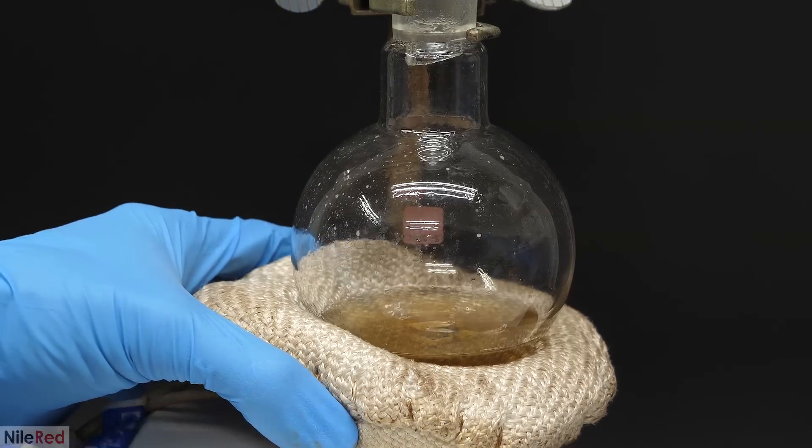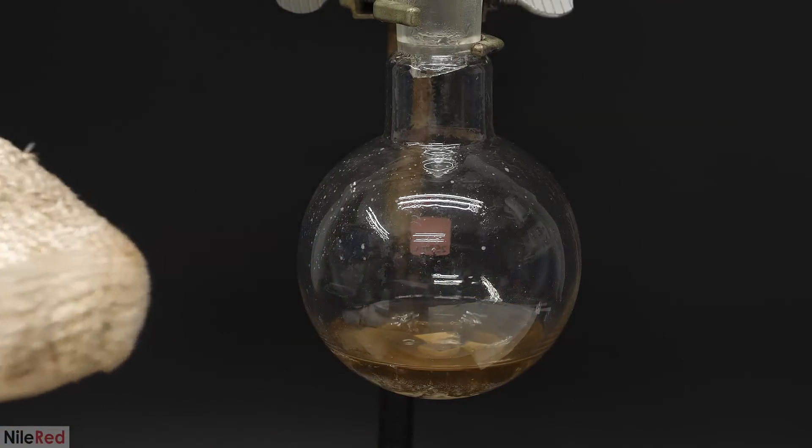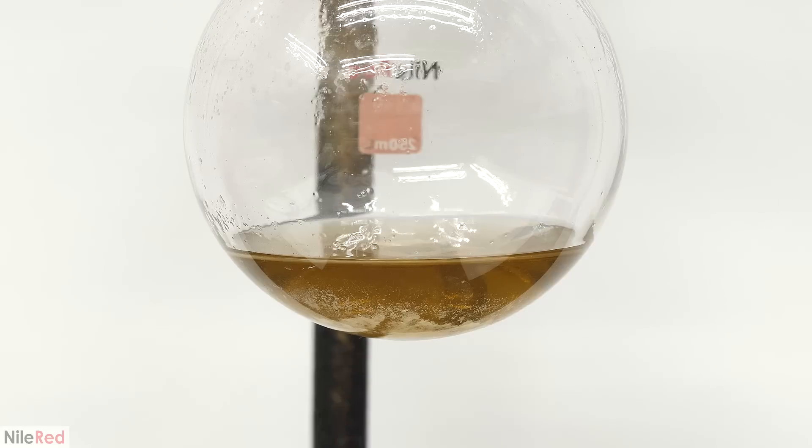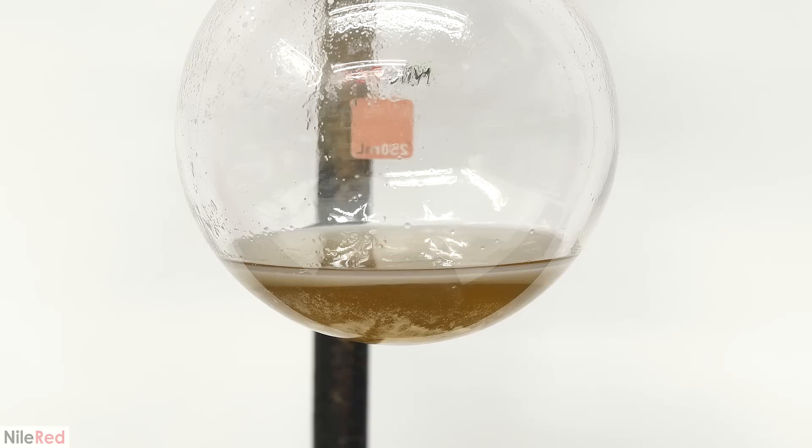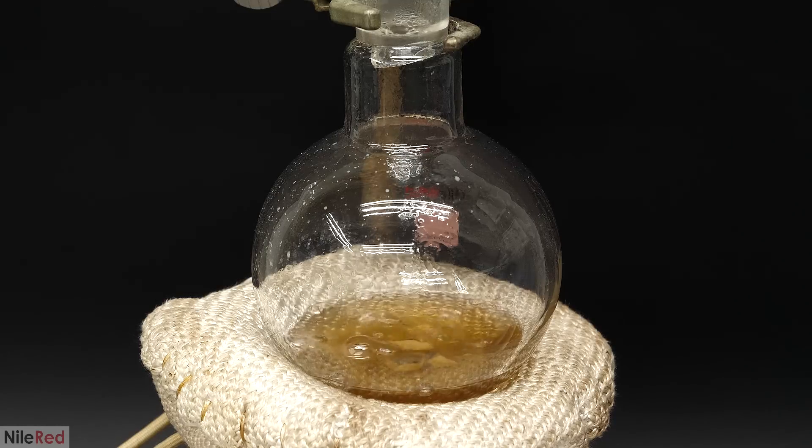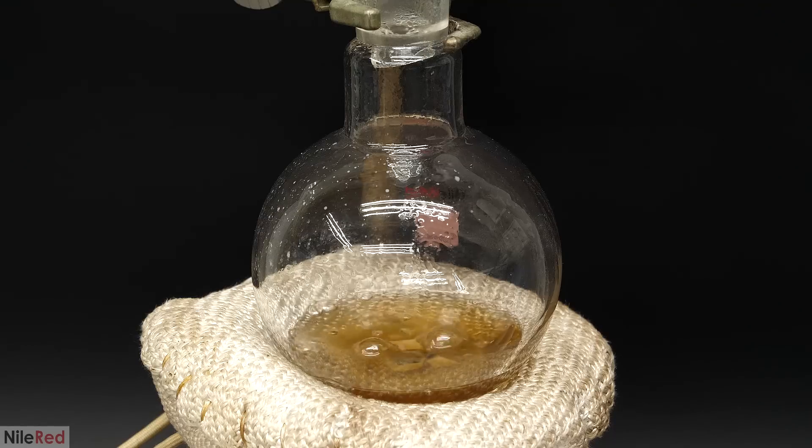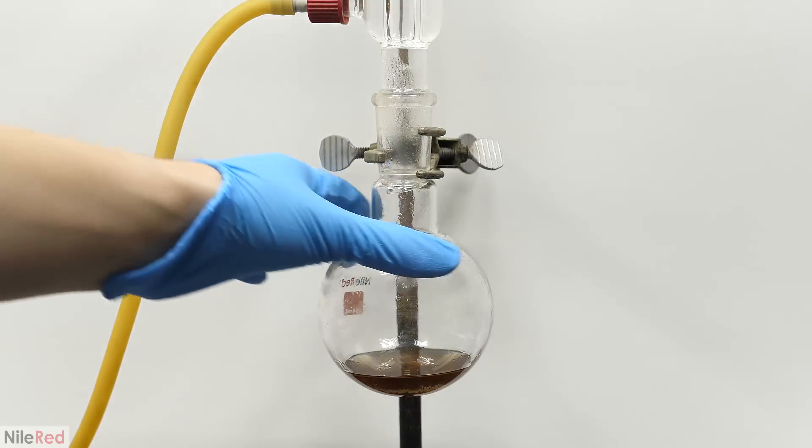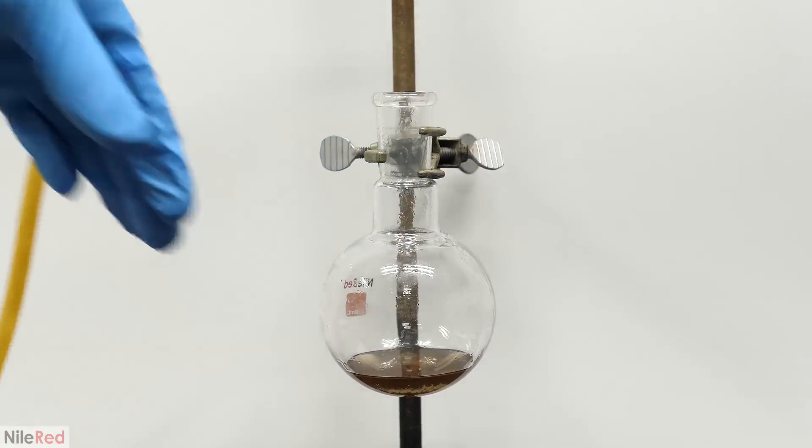After about an hour, I took away the heating mantle to check its progress. As it cooled a bit, it became cloudy, because some of the plastic was separating from the solution. This told me that the polymer chains were still too big, so I boiled it for another hour. This time, it cooled all the way to room temperature, without any cloudiness.